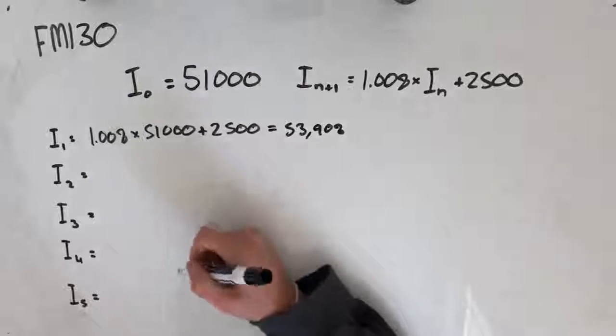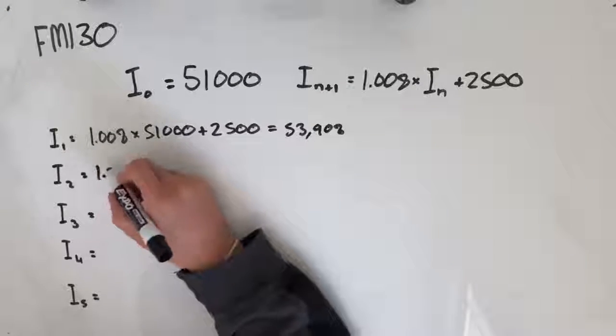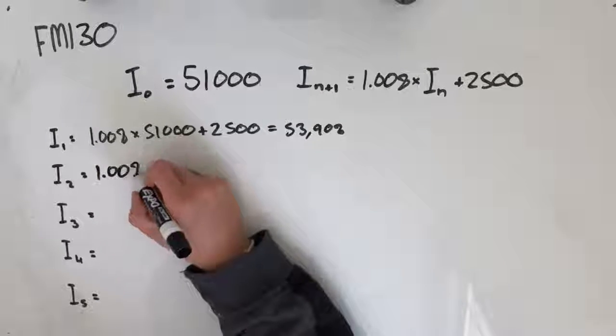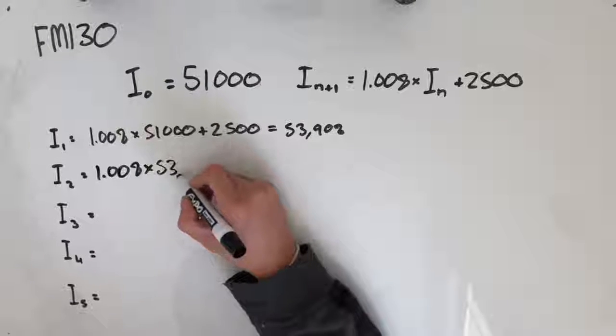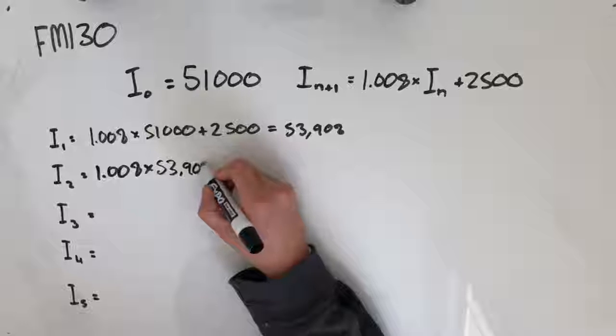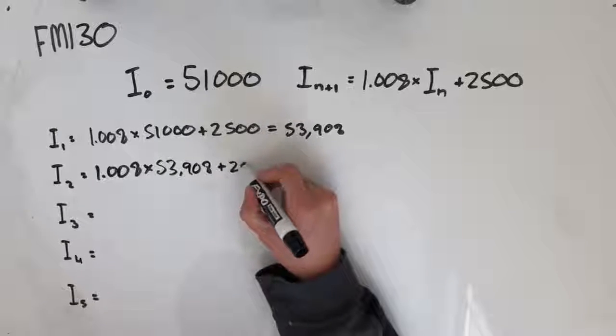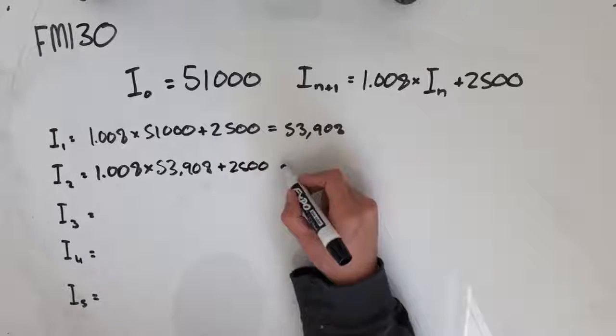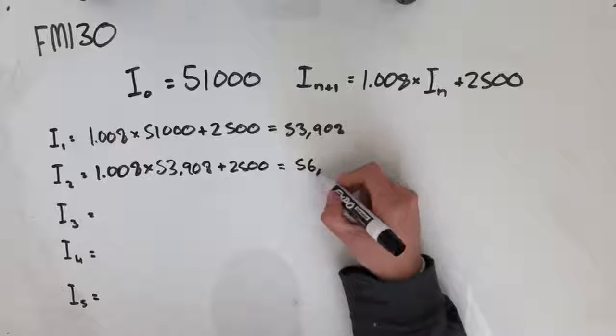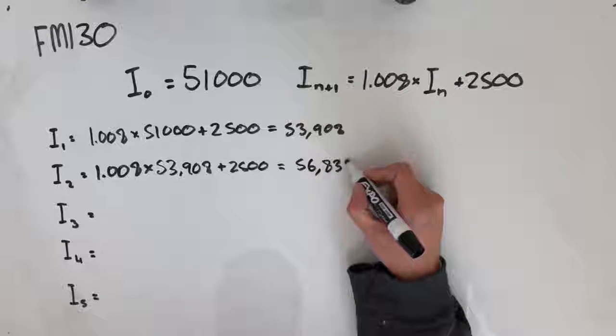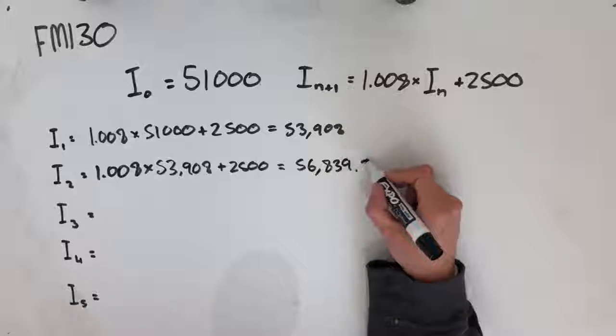Now, moving on to the next one. Plugging that 53,000 that we've just found into our recurrence relation to find I2: 1.008 times 53,908 plus 2,500. Plugging that into a calculator is going to give us 56,839.